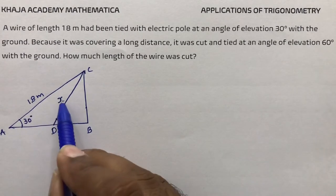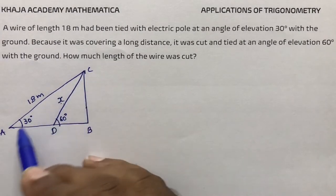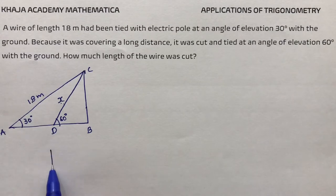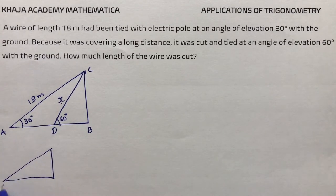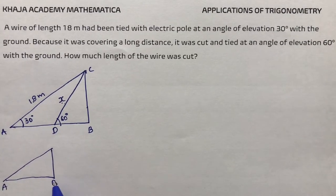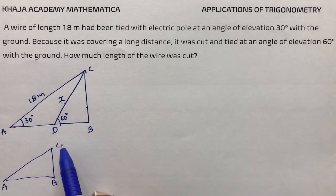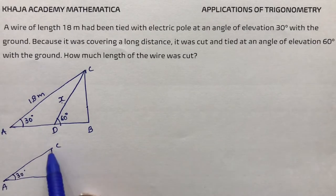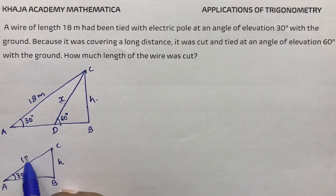To find x, first take the big triangle ABC where the angle is 30 degrees. First find BC, which is the height of the pole H. The hypotenuse is 18 meters.